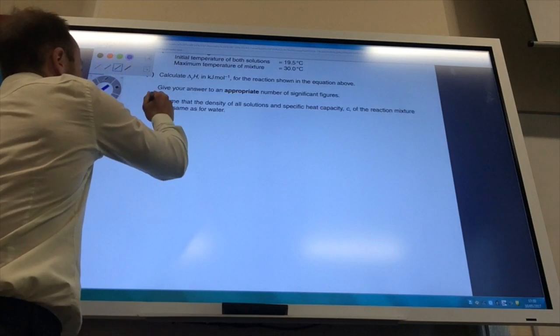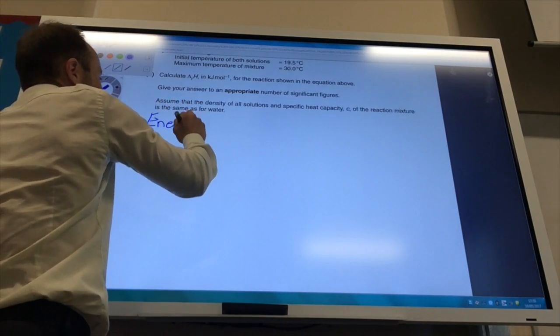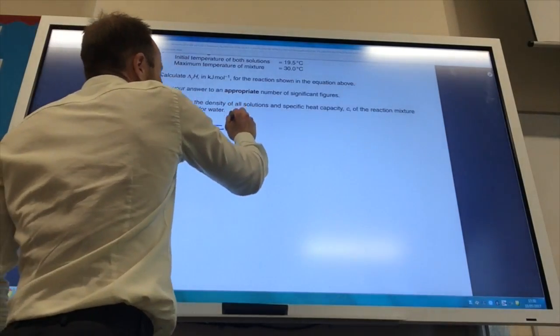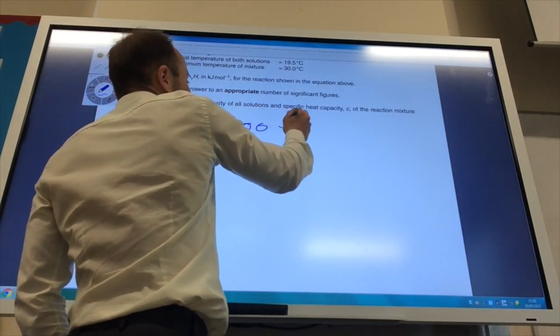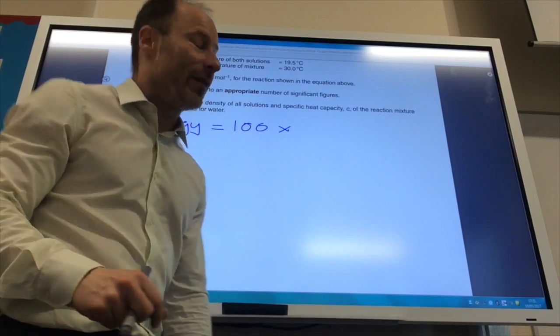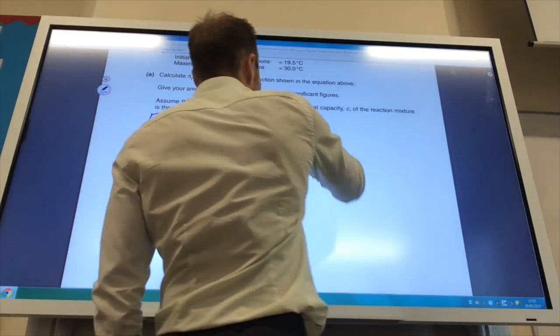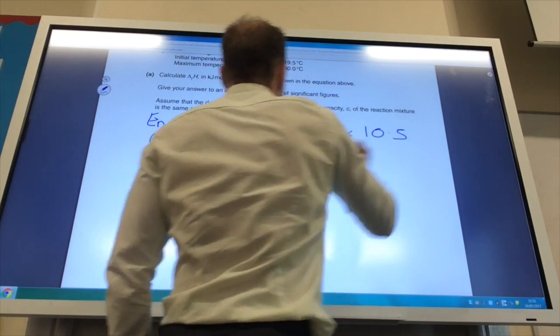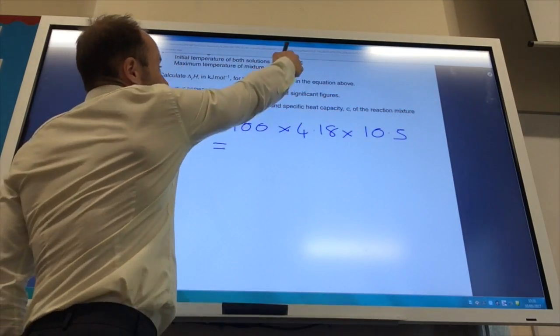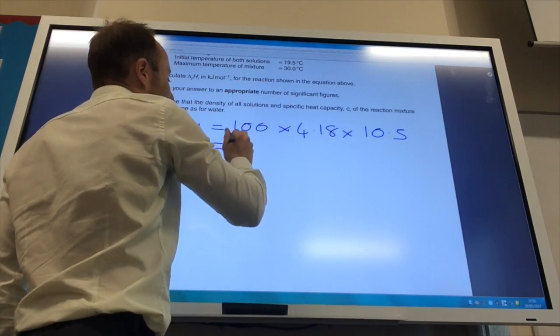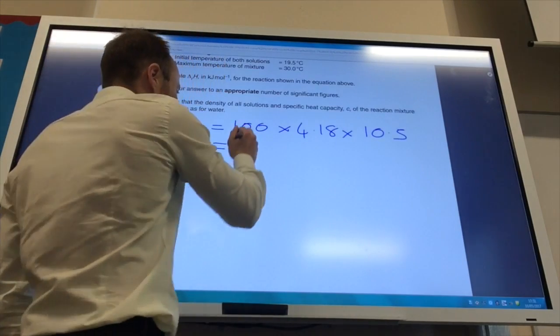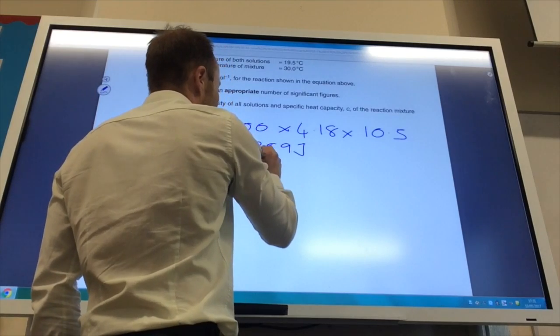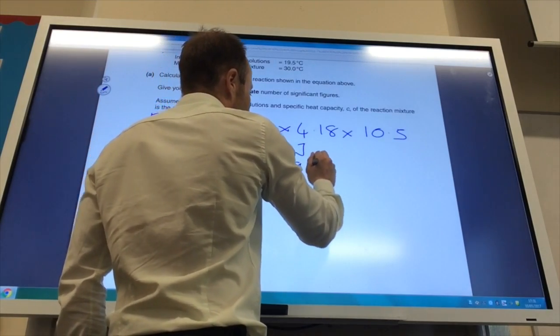So it is an exothermic reaction. So first things first, energy which is in joules is the mass of water which is 100, because it was 50 of one solution and 50 of the other solution, times 4.18 which is the specific heat capacity of water, times 10.5 which is your temperature change between 90.5 and 30. That gives you 4389 joules or 4.389 kilojoules.